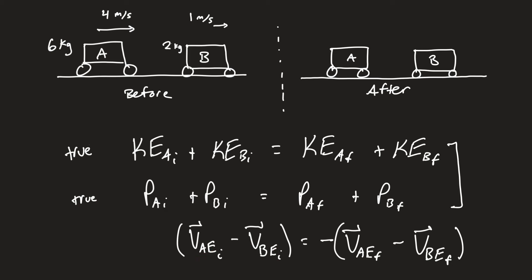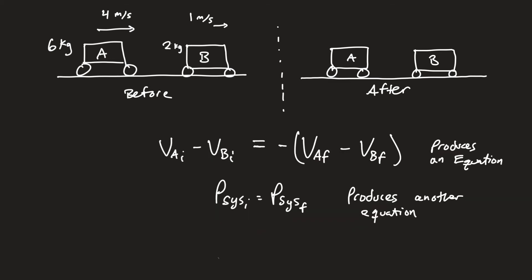Cleaning up the notation and dropping the earth-frame subscript — since it's implied in collision problems — we get: v_A_initial minus v_B_initial equals negative (v_A_final minus v_B_final). Subtract the two velocities before the collision and that equals the subtraction of them afterwards with a minus sign out front. This gives us one equation, and momentum conservation gives us another, so we have two equations and two unknowns to solve for the final velocities.